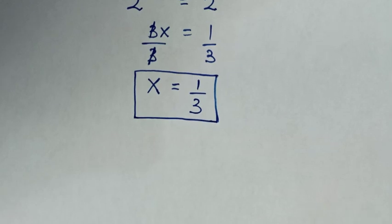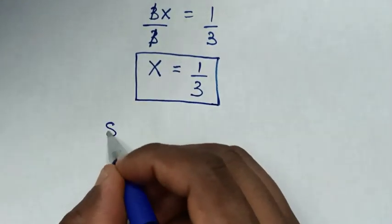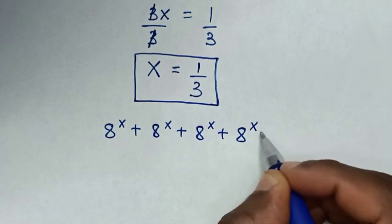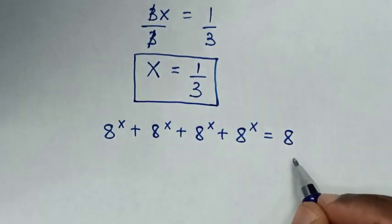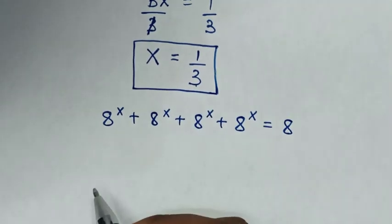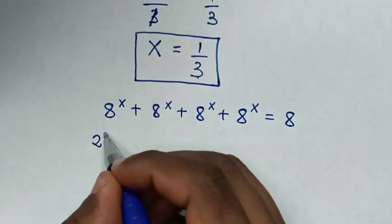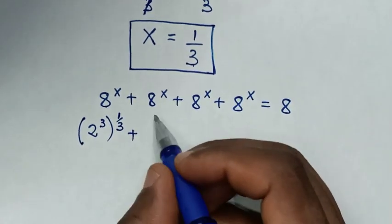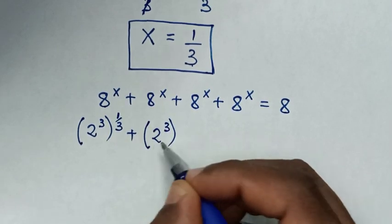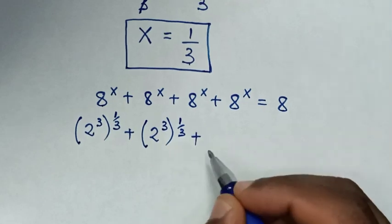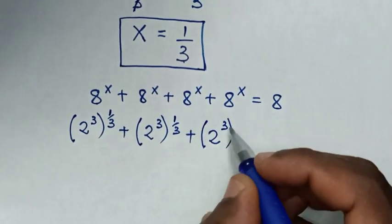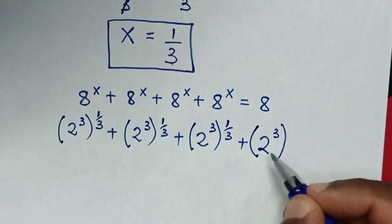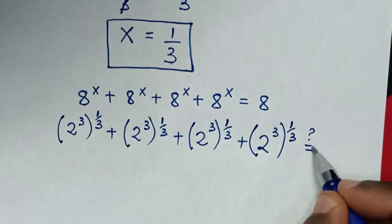Now to check if the value of x is correct, from our problem which is 8 power x plus 8 power x plus 8 power x plus 8 power x is equal to 8, we substitute x equals 1 over 3. So 8 is the same as 2 power 3, bracket power 1 over 3, plus 2 power 3 bracket power 1 over 3, plus 2 power 3 bracket power 1 over 3, plus 2 power 3 bracket power 1 over 3, is equal to 8.